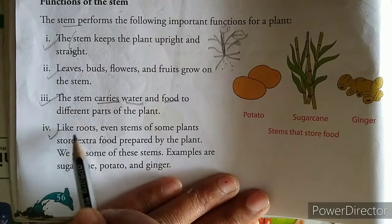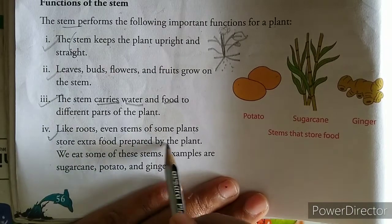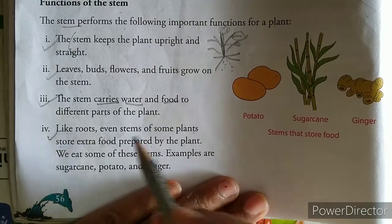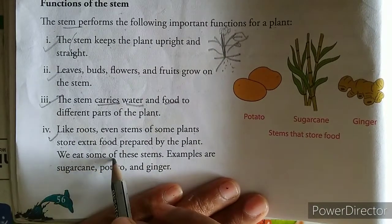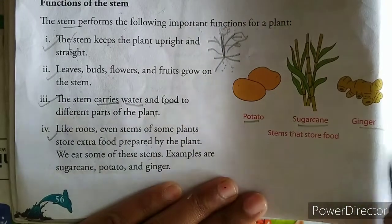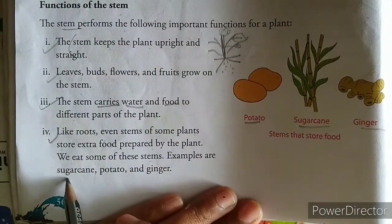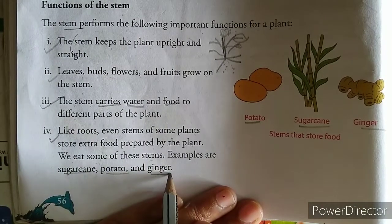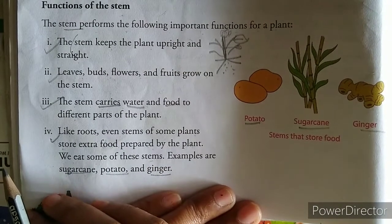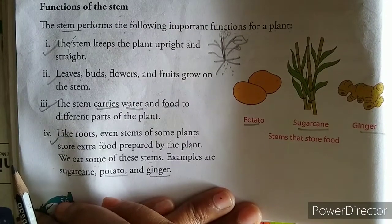Like roots, the stem of some plants also stores extra food prepared by the plant, and we eat some of these stems — like potatoes, sugar cane, and ginger. So examples are sugar cane, potatoes, and ginger, which are stems that we eat as food. Okay students, I hope you all understood properly. Keep learning — thanks for watching this video.